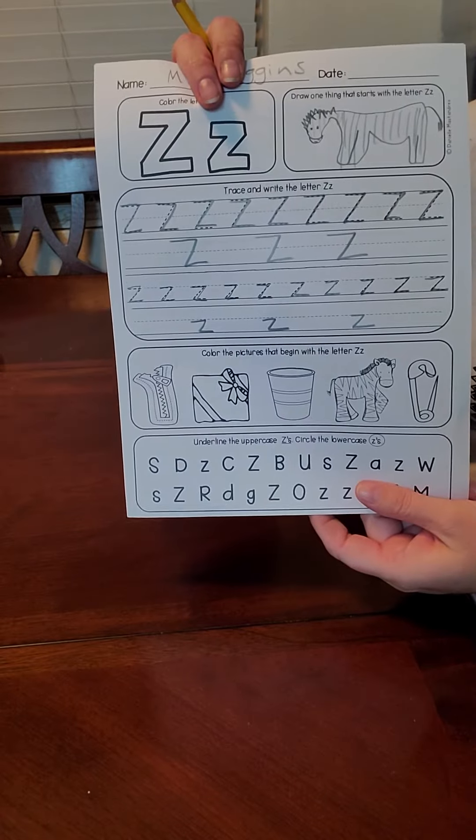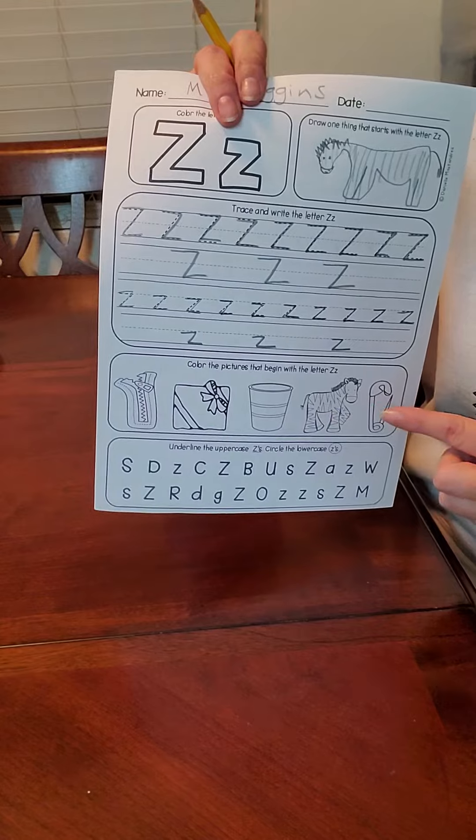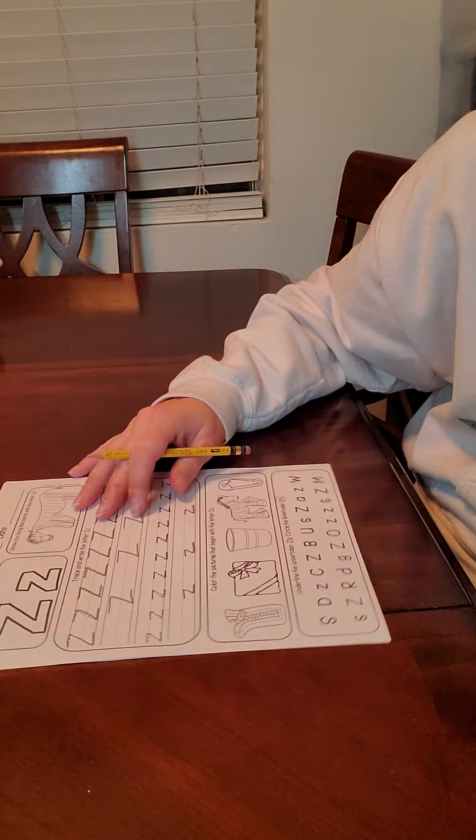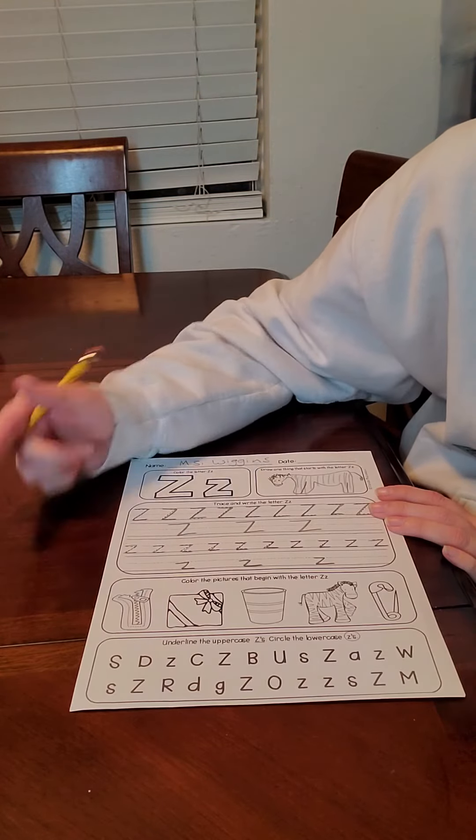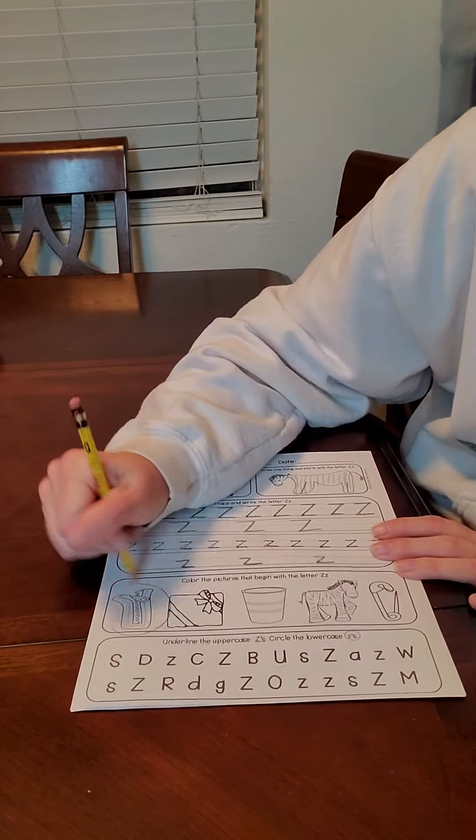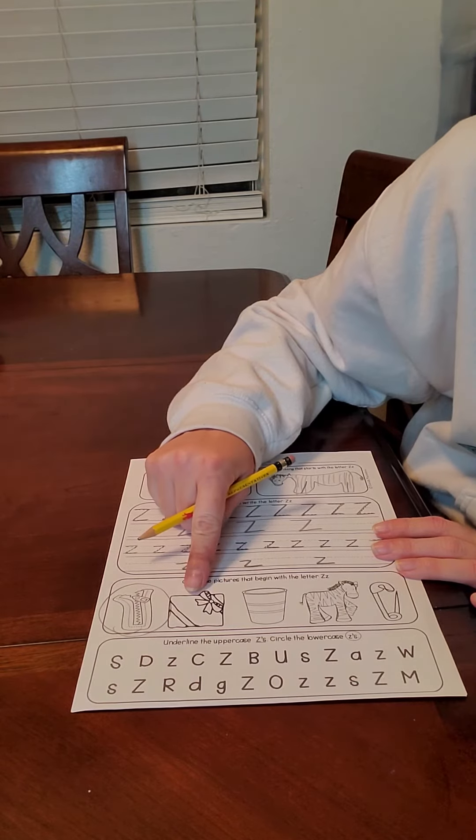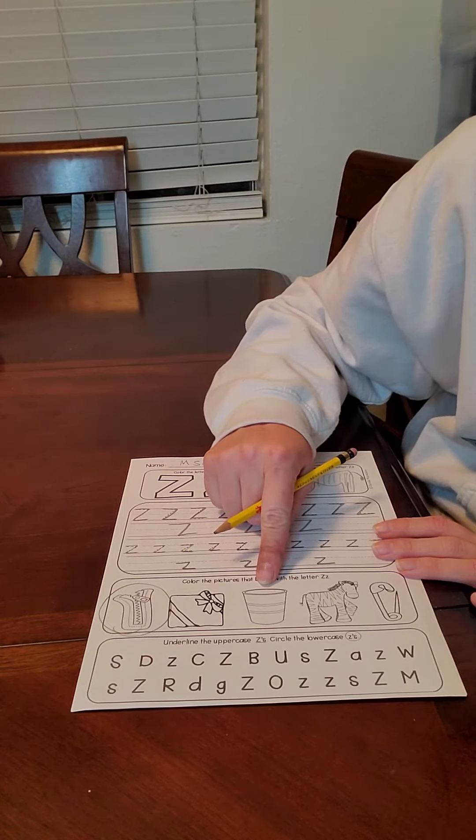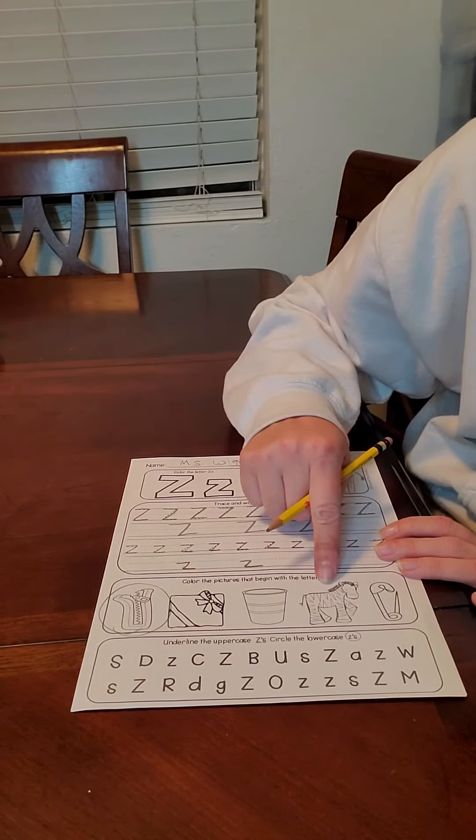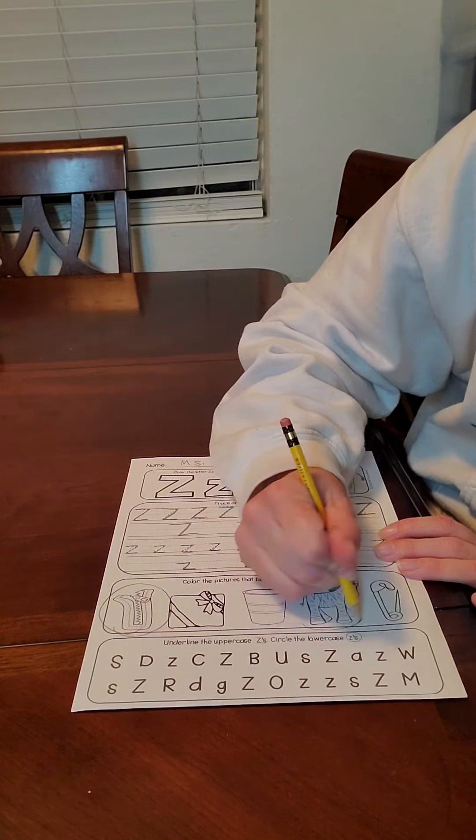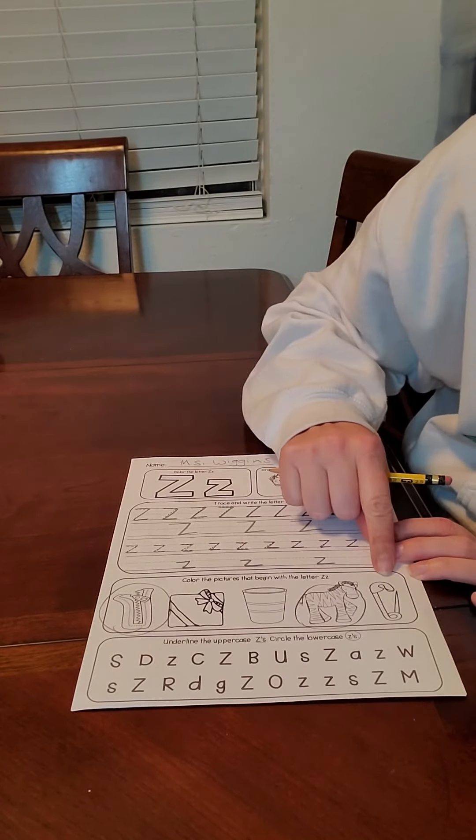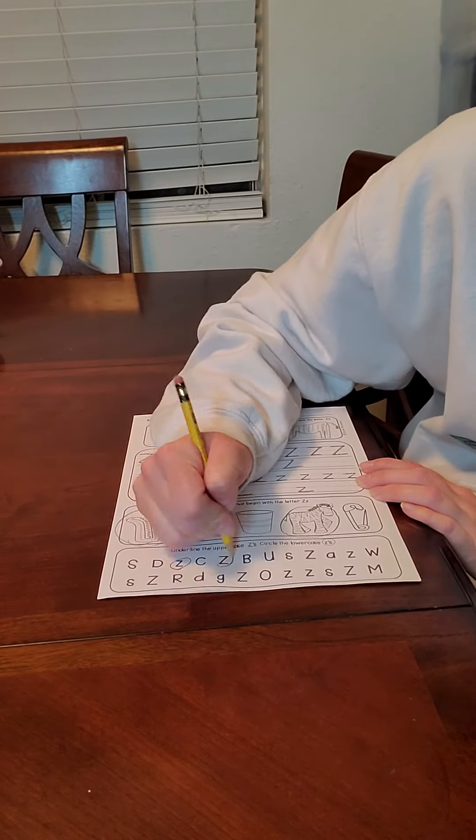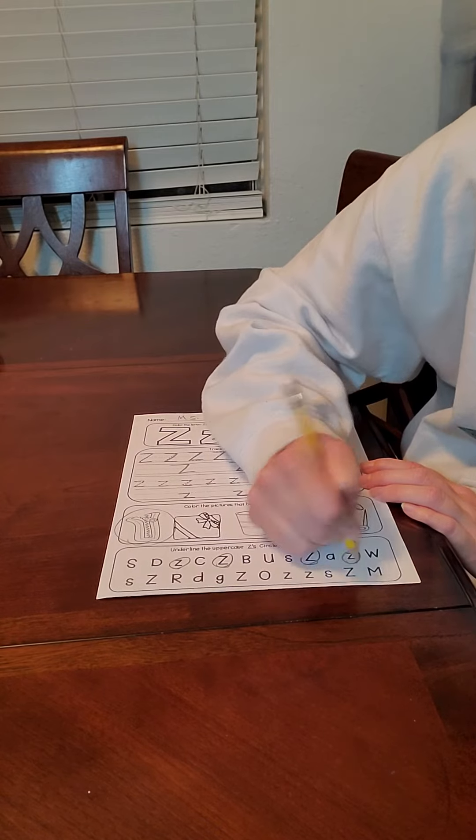And then, down here, we have to find the things that begin with the sound Z and circle them. So how about zipper? Yep. Go ahead and circle it. How about gift? Nope. How about cup? Nope. How about zebra? Yep. How about pen? That's a safety pen. Nope. And then, down here, just circle your uppercase and lowercase Z's.